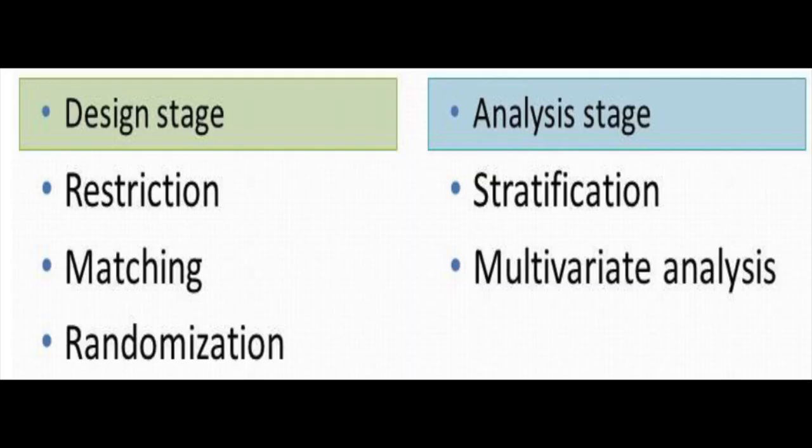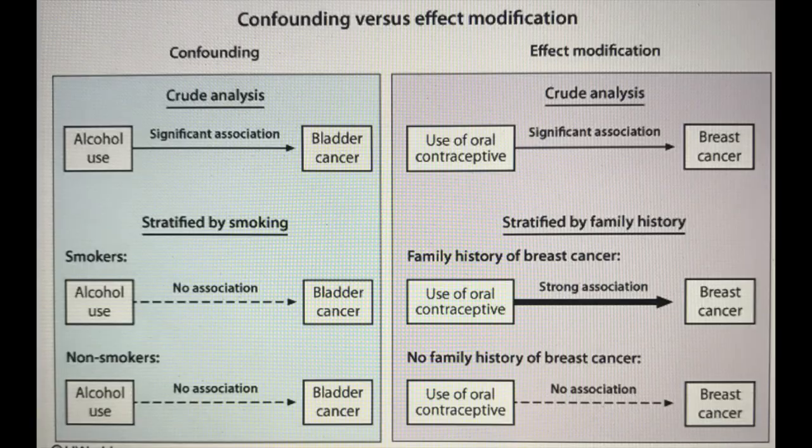The effect of confounders can be controlled by restriction, matching, and proper randomization. In a study with a larger sample size, stratified analyses and adjustments in multivariable regression analysis can identify confounders during data analysis.